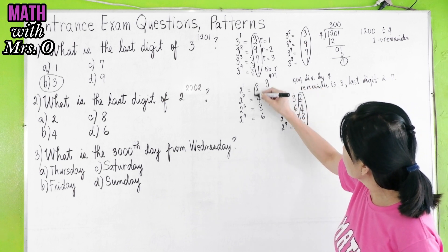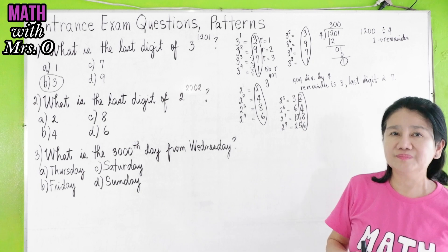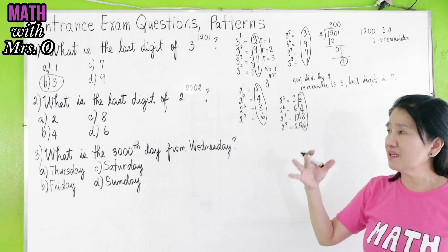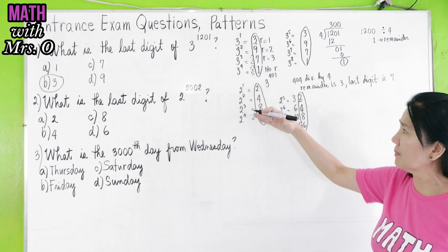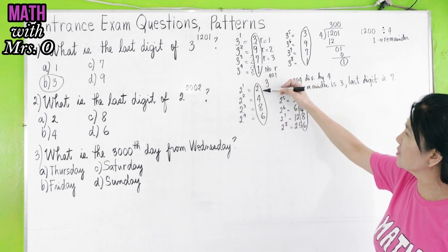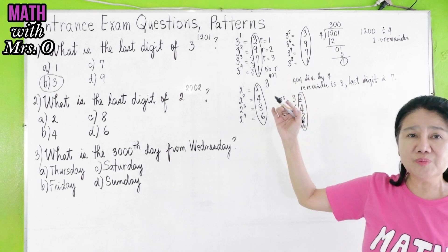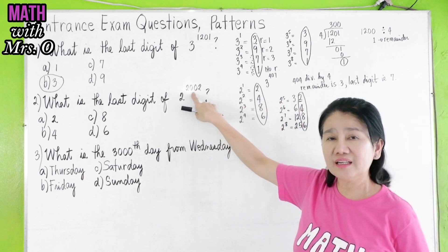What do you observe here? The pattern repeats again after the 4th time you multiply 2. Your last digit will be 2, 4, 8, 6. Therefore, what do we do? We divide again the exponent, 2,002 by 4.